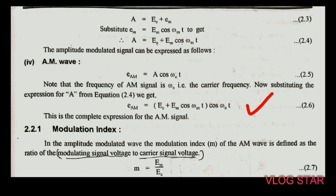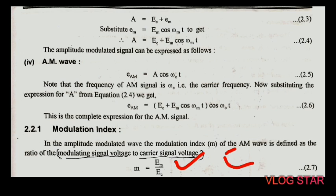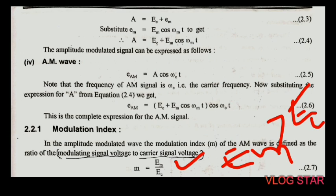Now we calculate the modulation index. In an amplitude modulated wave, the modulation index m is defined as the ratio of modulating signal voltage to carrier signal voltage: m = E_m / E_c. When E_m is greater than E_c, m is greater than 1 and the shape of the AM signal becomes distorted — this is called over-modulation. The modulation index is also called the modulation factor, modulation coefficient, or degree of modulation. Expressed as a percentage it is called percentage modulation.